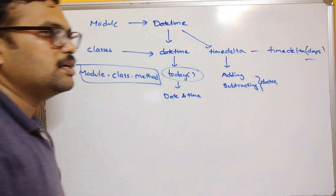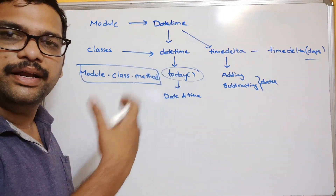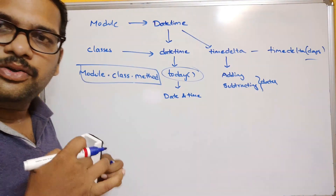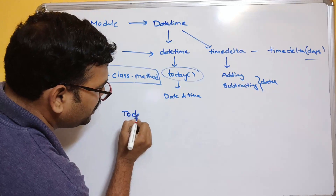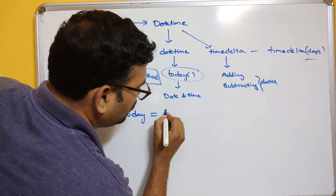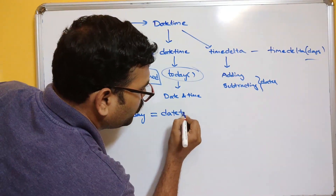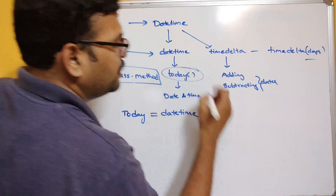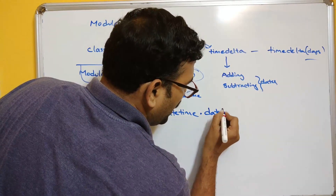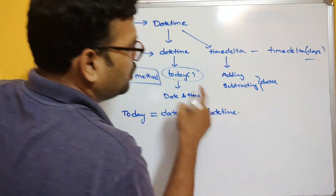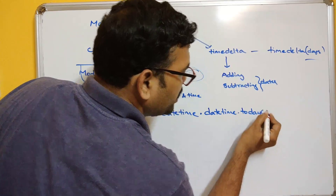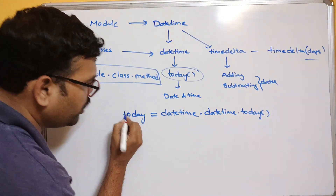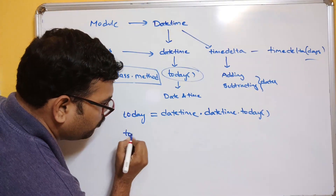First we need to print the current today's date and time. Today's date and time is obtained with the module name datetime, dot class name datetime, dot method today(). Simply calling the today() method gives us everything we need.